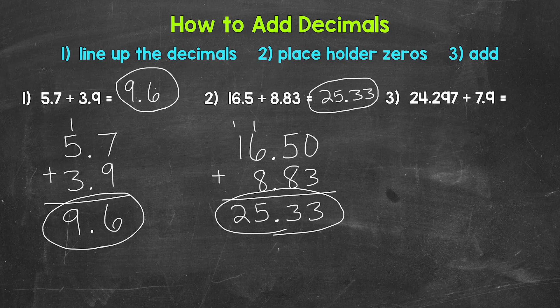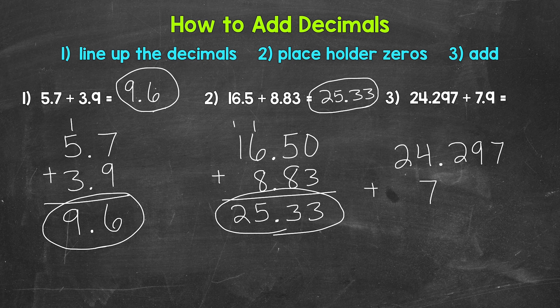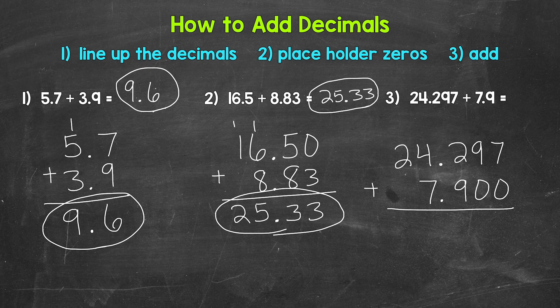Moving on to number three, we have 24 and 297 thousandths plus seven and nine-tenths. Let's line up the decimals: 24 and 297 thousandths plus seven and nine-tenths. Our decimals are lined up, therefore our places are lined up. We can use placeholder zeros so that both decimals go to the thousandths place. We'll use two placeholder zeros after the nine.